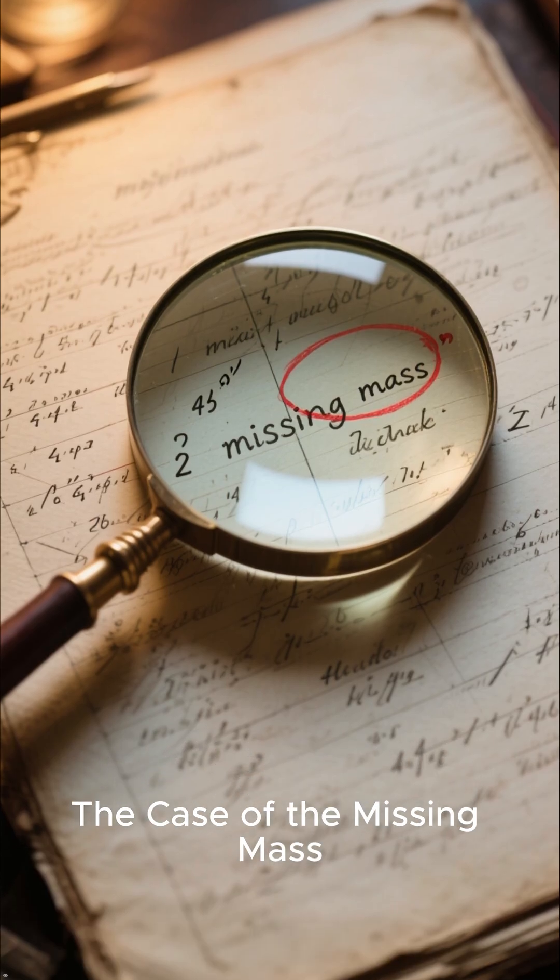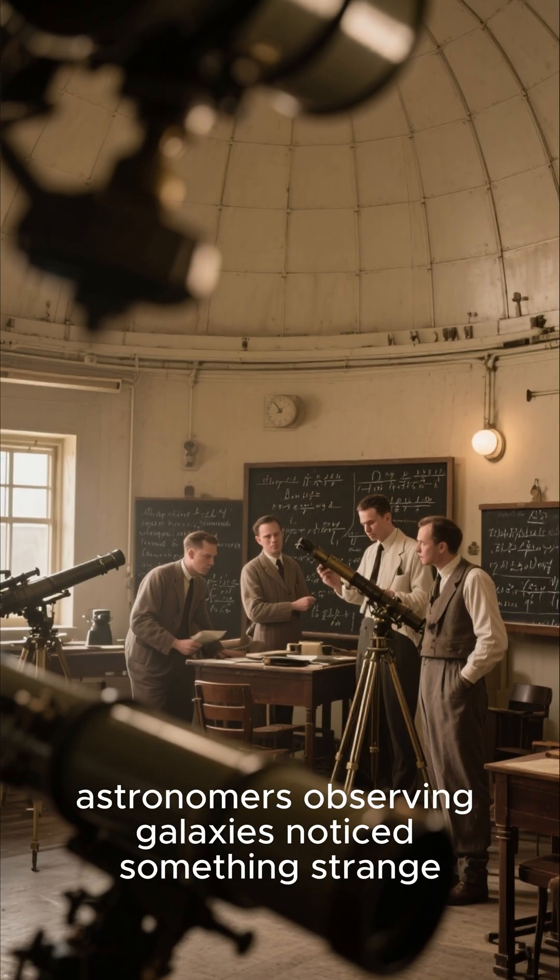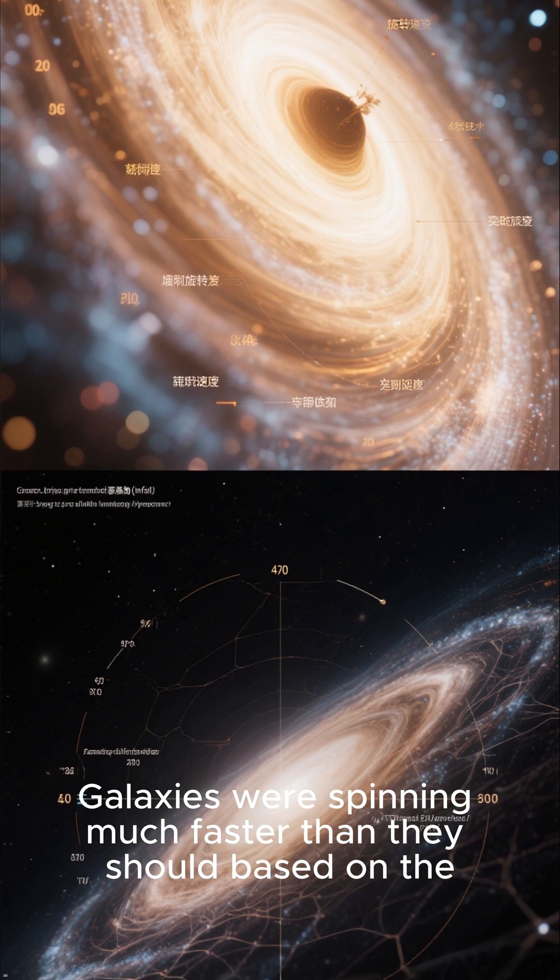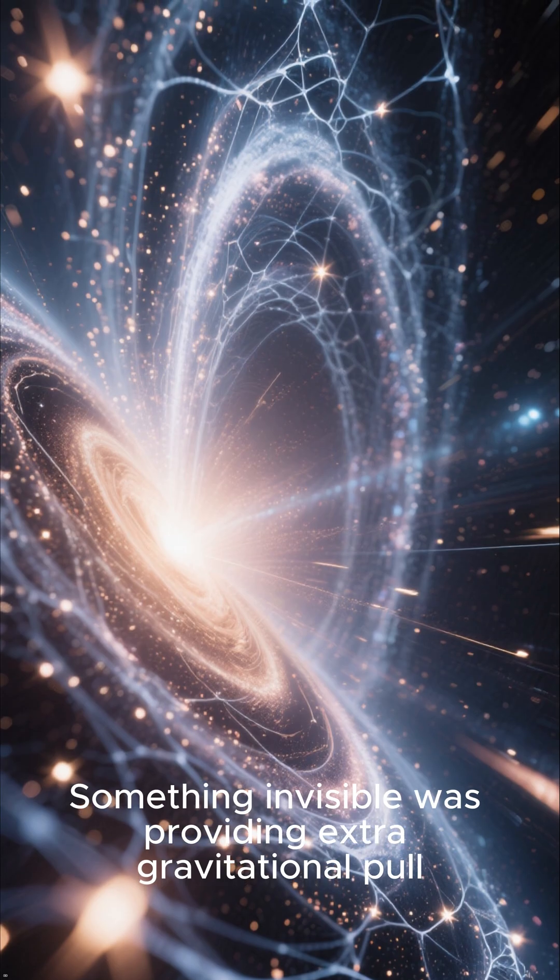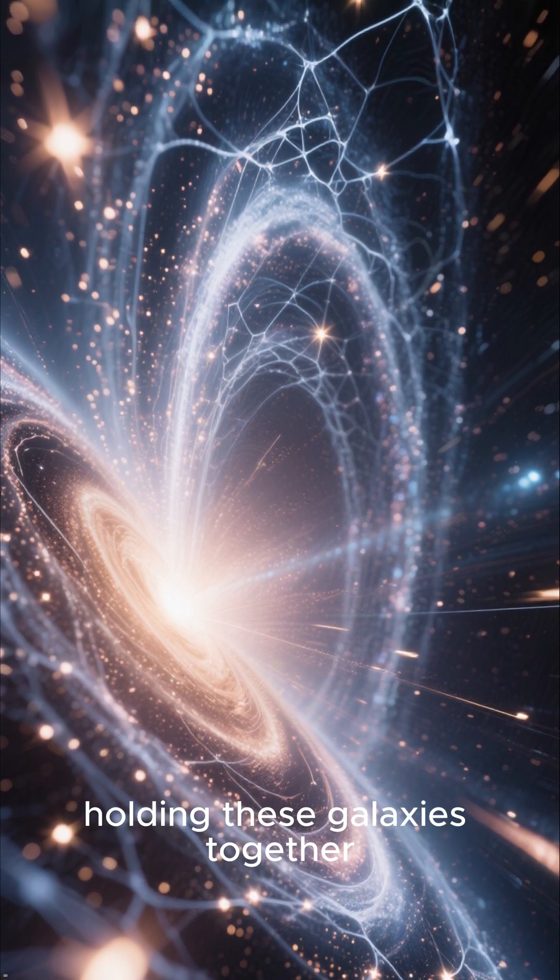The case of the missing mass. Let's talk about a cosmic puzzle. In the 1930s, astronomers observing galaxies noticed something strange. Galaxies were spinning much faster than they should based on the amount of visible matter they contained. Something invisible was providing extra gravitational pull, holding these galaxies together.